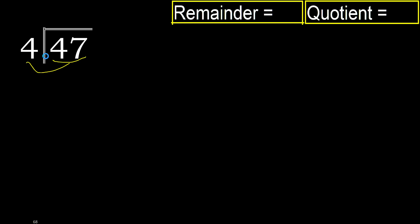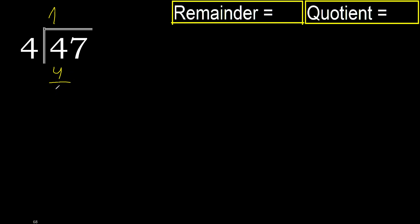47 divided by 4. 4 is not less, therefore we work with 4. Which number multiplied by 4 is nearest to 4 but not greater? 4 multiplied by 2 is 8, 8 is greater. 4 multiplied by 1 is 4, is not greater. OK, 4 minus 4 is 0. Next, eliminate 0 on this side. Bring down 7. 4 multiplied by 2 is 8.